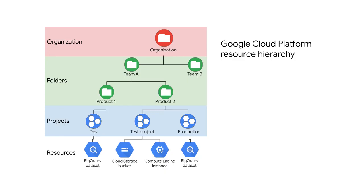Cloud Identity and Access Management, also called IAM, lets you fine-tune access control to all the GCP resources you use. You define IAM policies that control user access to resources. Remember, if you want to use folders, you must have an organization.